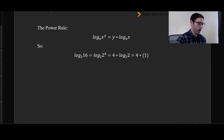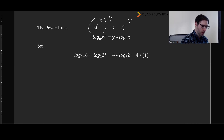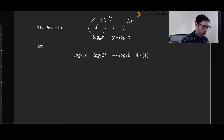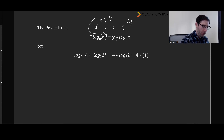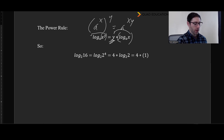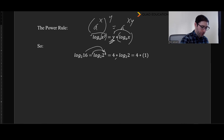Finally, the power rule. We know that a to the x to the power of y equals a to the xy — power to a power means we multiply. What this rule says is that log base a of x to the power of y equals y times log base a of x. So you can bring the exponent out to the front. To illustrate: log base 2 of 16 — we rewrite 16 as 2 to the 4th, bring that 4 out front to get 4 times log base 2 of 2, and log base 2 of 2 is 1, so the answer is 4.